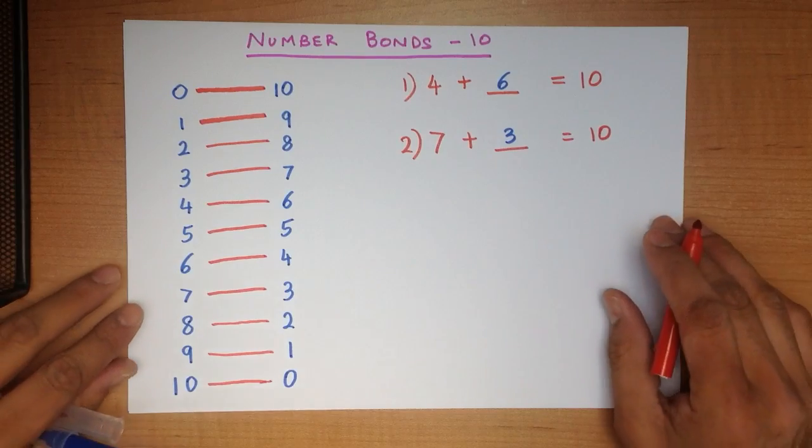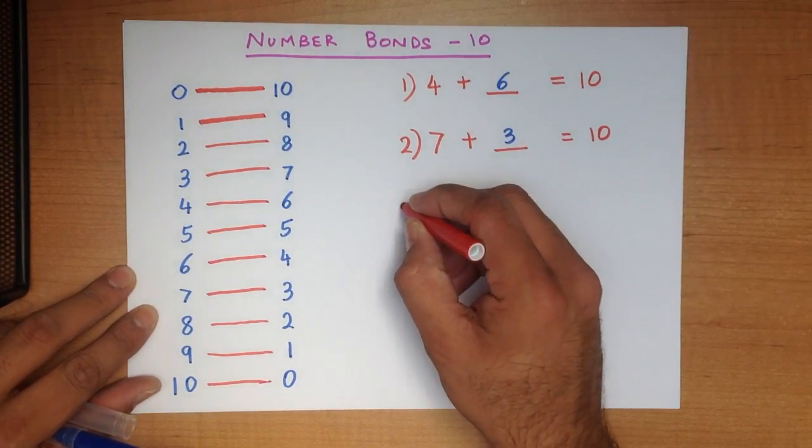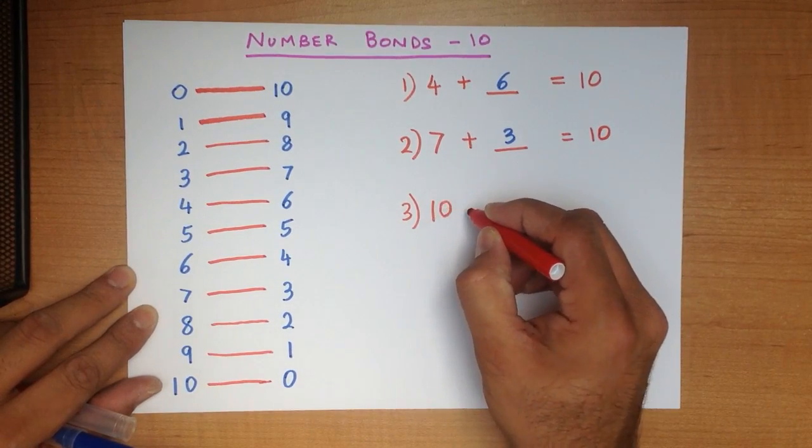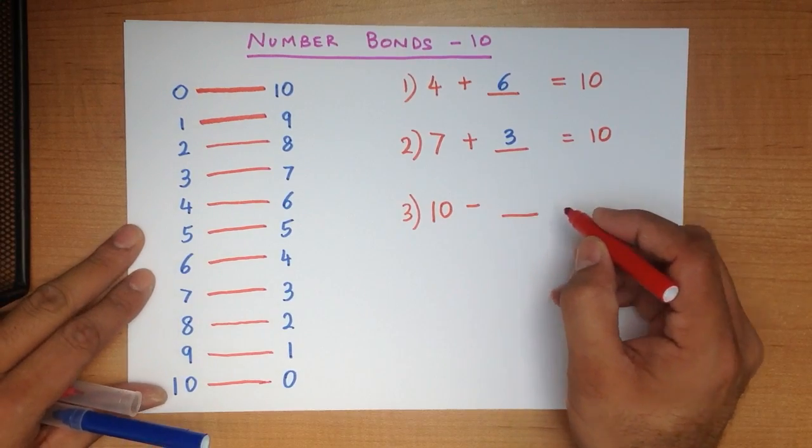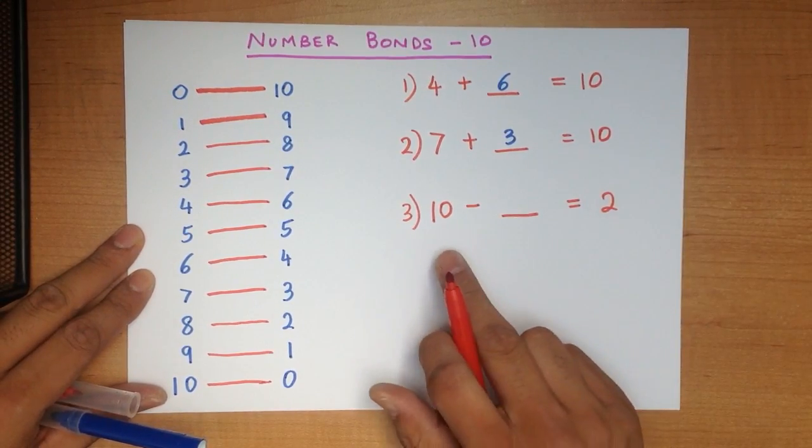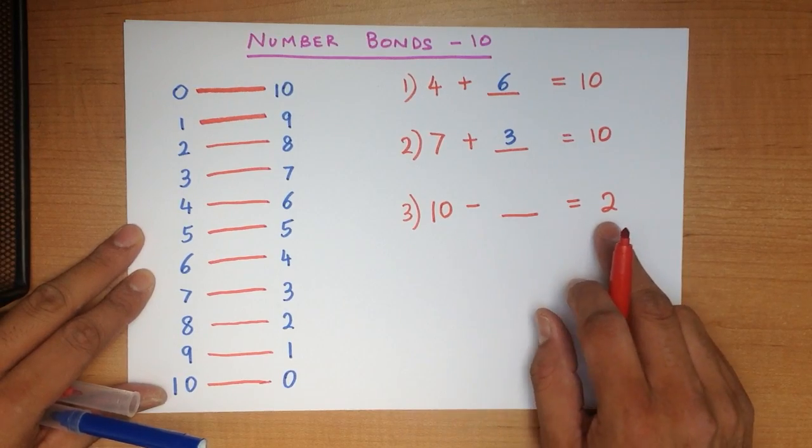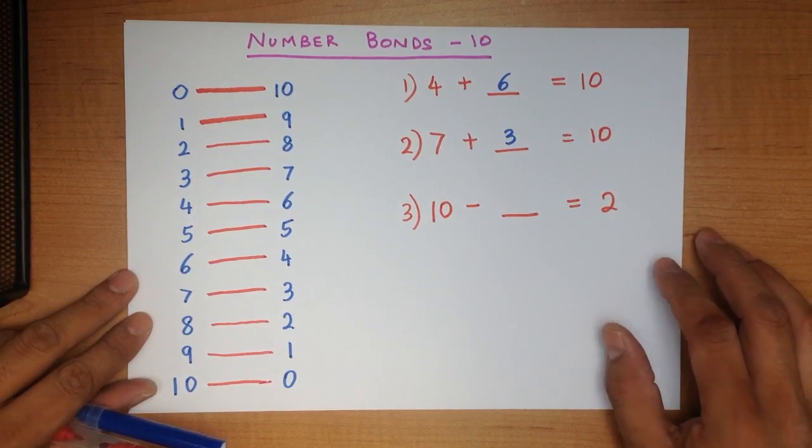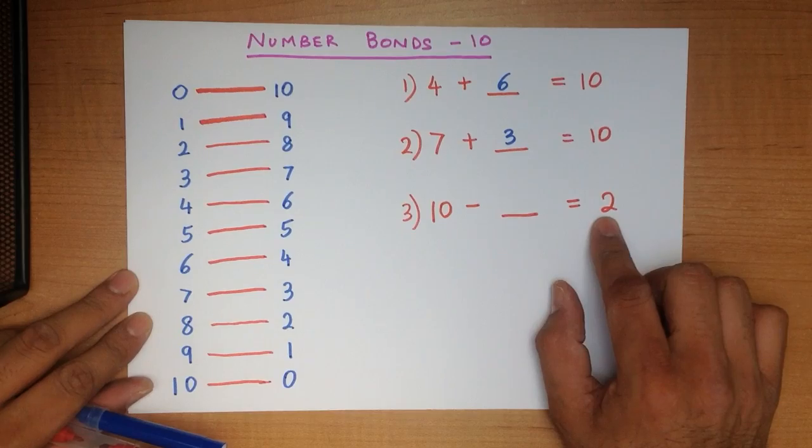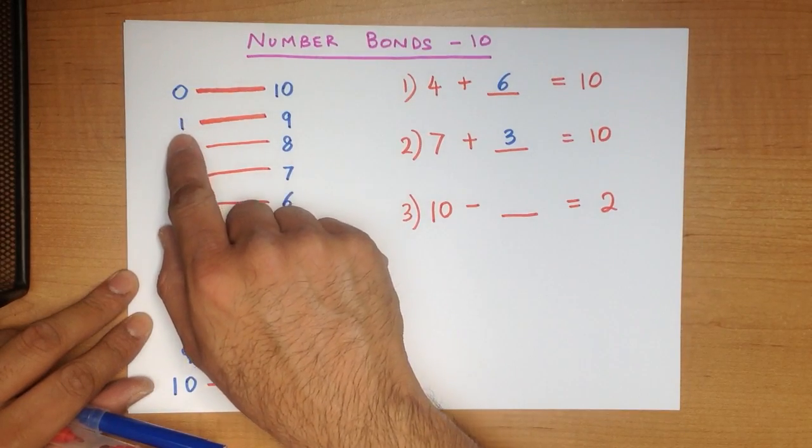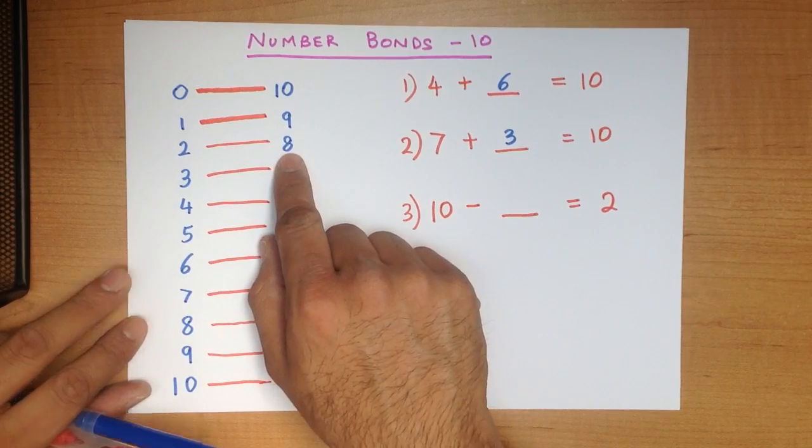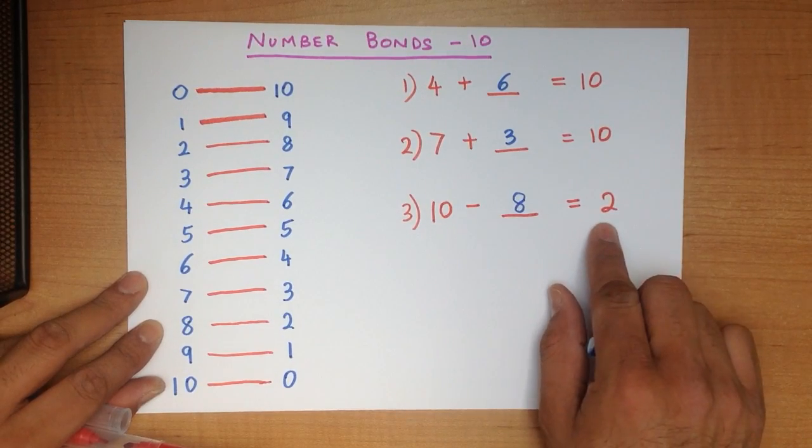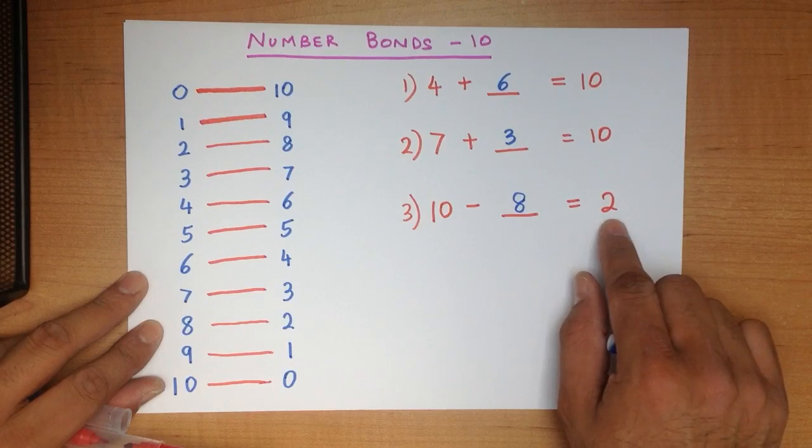How about if we look at a couple of minus questions? Let's do this: 10 minus what number equals 2? 10 minus something equals 2. In this case what we do is, we look at the last number 2. Come down here on the left hand side 2. If we go across it is 8. 10 minus 8 equals 2.